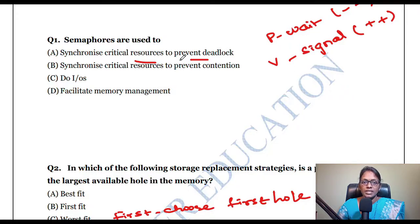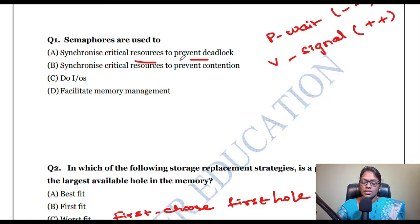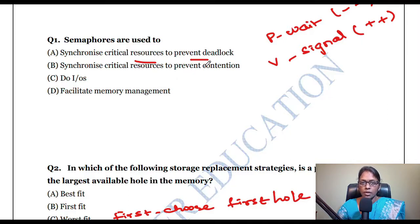Semaphores are variables used to synchronize processes. Deadlock happens when two or more processes are fighting for one resource. To avoid that, we use the variable semaphore. Semaphore is a variable used to synchronize resources — one process should wait until another completes. Semaphores are variables used to synchronize critical resources to prevent deadlock.